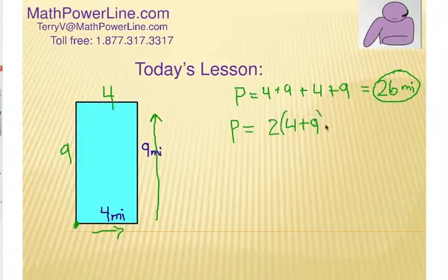So, one way to think about this is walk halfway around and then double it. Now, let's see if that gives us the same answer. What's four plus nine? That's right, thirteen. What's two times thirteen? Yep. Same answer. Twenty-six miles.